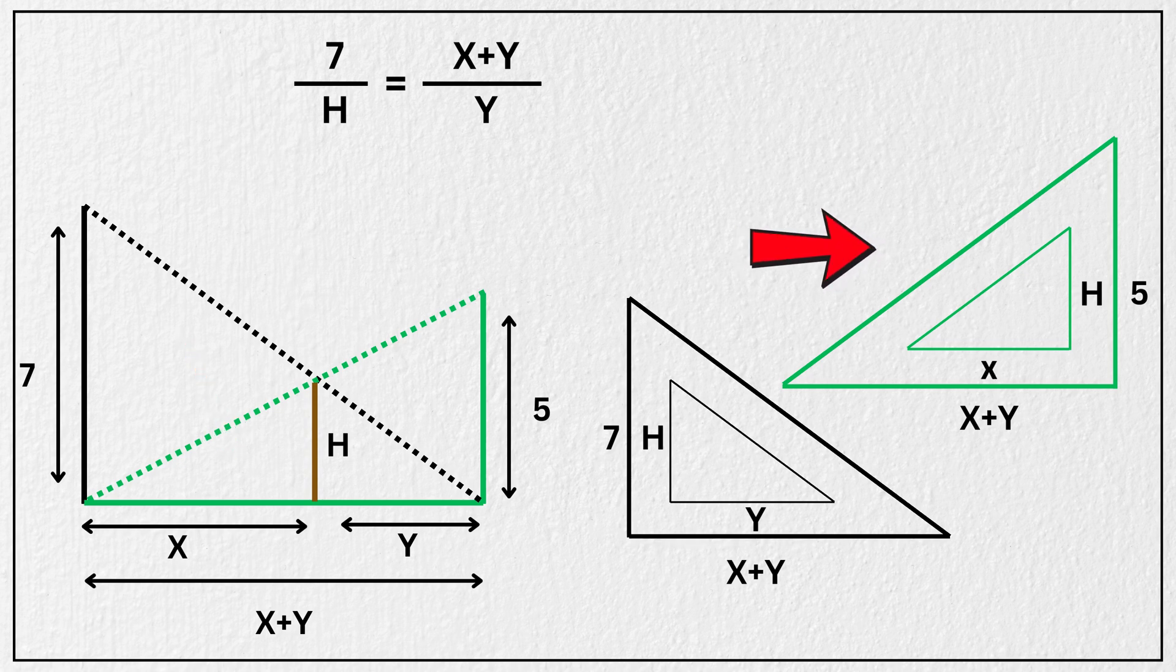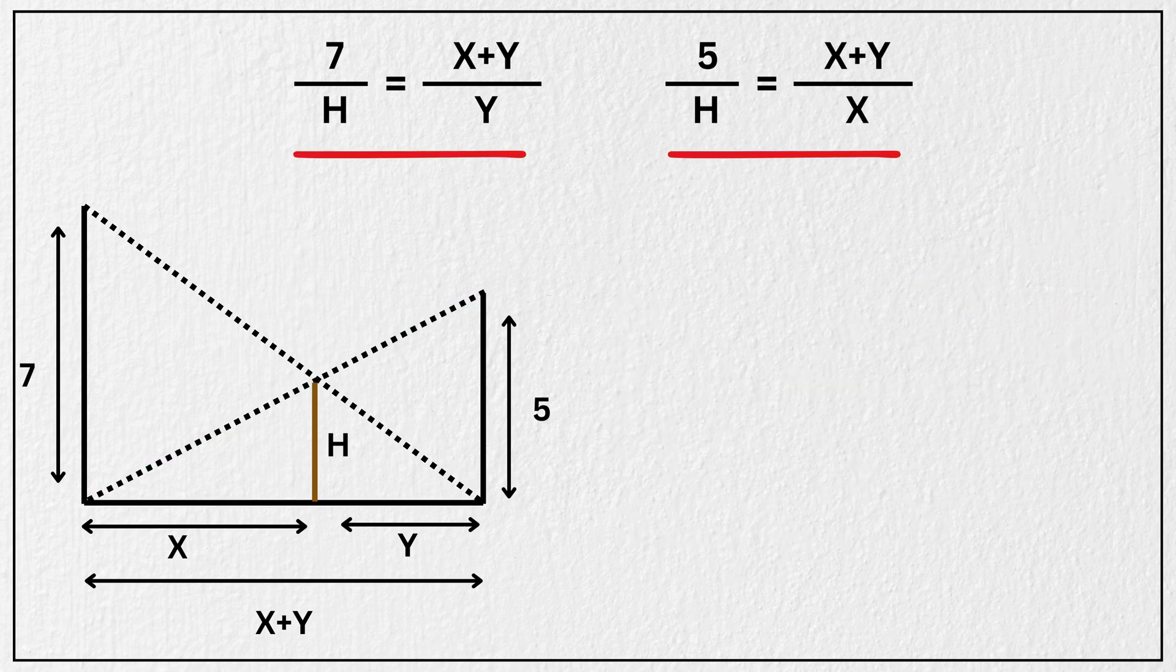Again, as they are similar triangles we can write a proportion as, 5 divided by h is equal to x plus y divided by x. Now rearranging these equations,